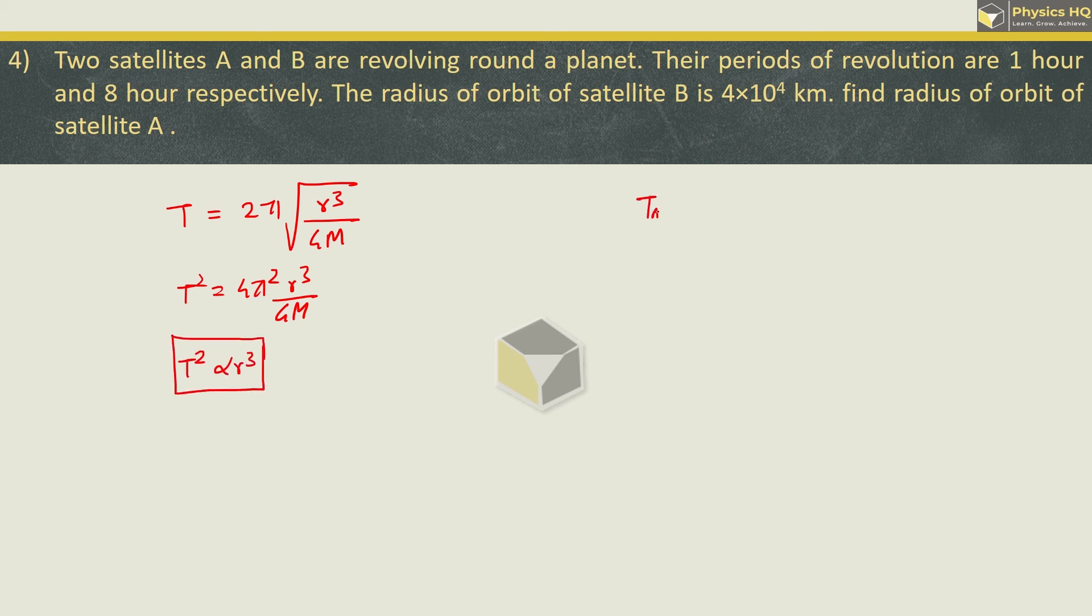So from this we can say T^2 is directly proportional to R^3. Therefore we can write T_A^2 upon T_B^2 equals radius of first satellite cube upon radius of second satellite cube. Now we are supposed to find the radius of satellite A. So we got R_A^3 equals (T_A upon T_B)^2 into R_B^3. Now they have said the period of revolution is 1 hour and 8 hour for satellite A and B. So time period for A upon time period of B is 1 upon 8.